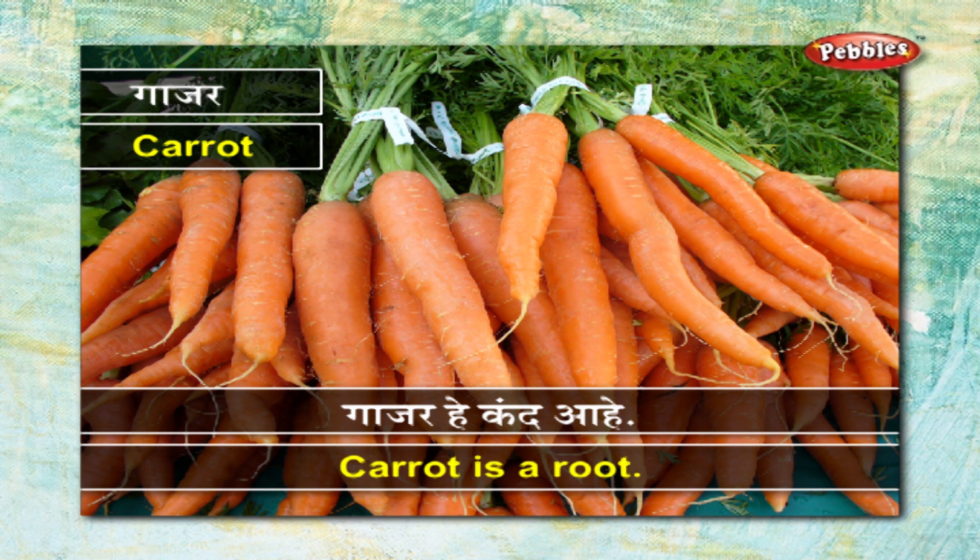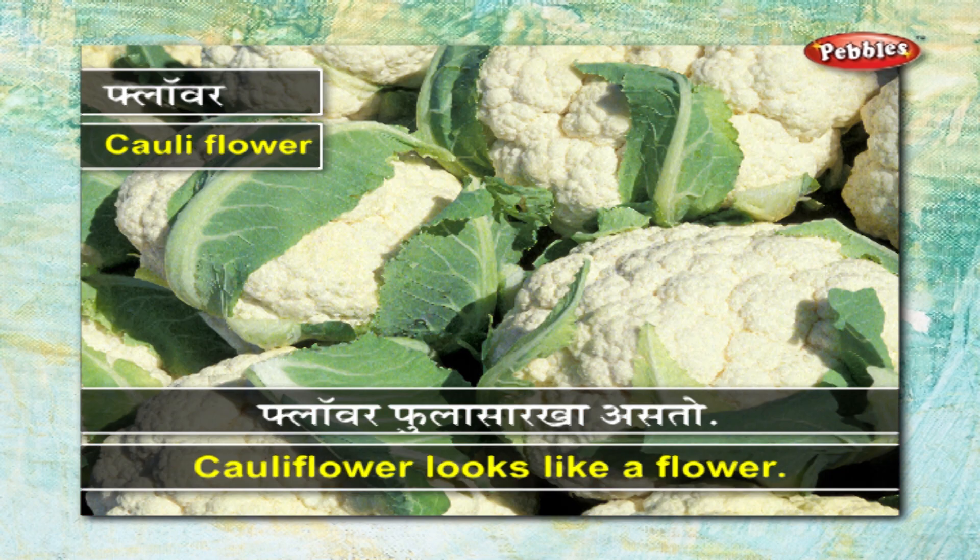गाजर - गाजर हे कंद आहे. फ्लावर - फ्लावर फुलासारखा असतो.